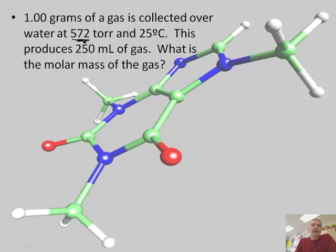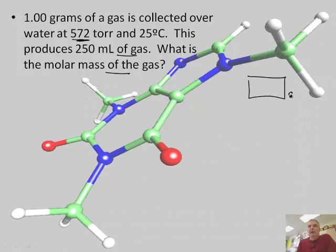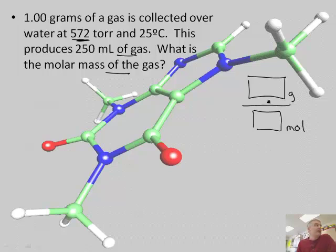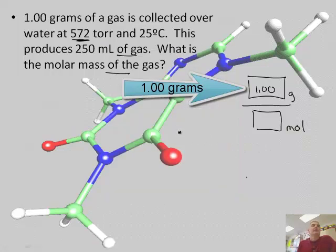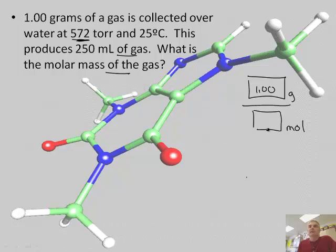One gram of a gas is collected over water. Now, when we say over water, we've got to play that water vapor pressure game that we talked about earlier, and it produces 250 mils of gas. What is the molar mass of a gas? Well, we're going to use this equation. So many grams divided by so many moles. Well, guess what? We know we have 1.00 grams. Sorry, I got interrupted.